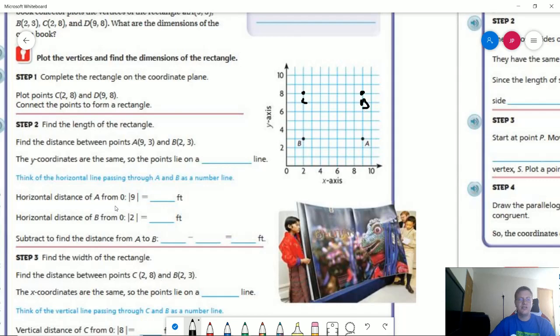And then they want us to figure out what the distance is for the length as well as for the width. So to start with, we're going to take our absolute value of 9, which is 9, absolute value of 2, which is 2, and do 9 minus 2 equals 7 feet. So that's going to be our distance from here to here.